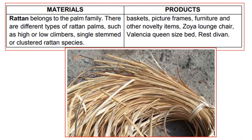Next is rattan, which belongs to the palm family. There are different types of rattan, such as high or low climbers, single-stem or clustered rattan pieces. These materials can be produced into baskets, picture frames, furniture, and other novelty items such as the Soylands chair, Valencia queen-size bed, or rest divan.